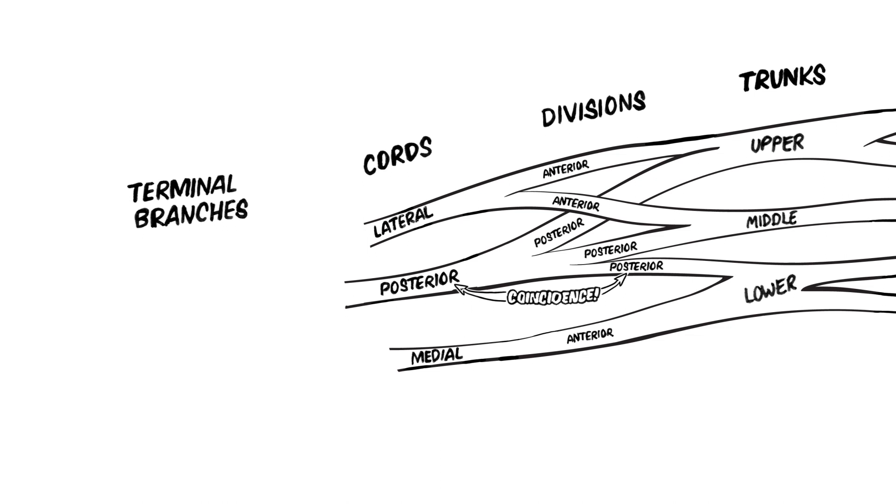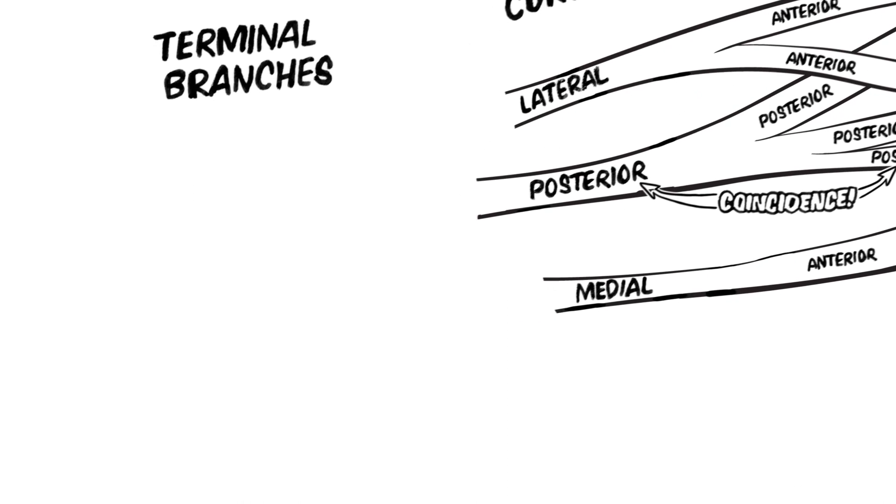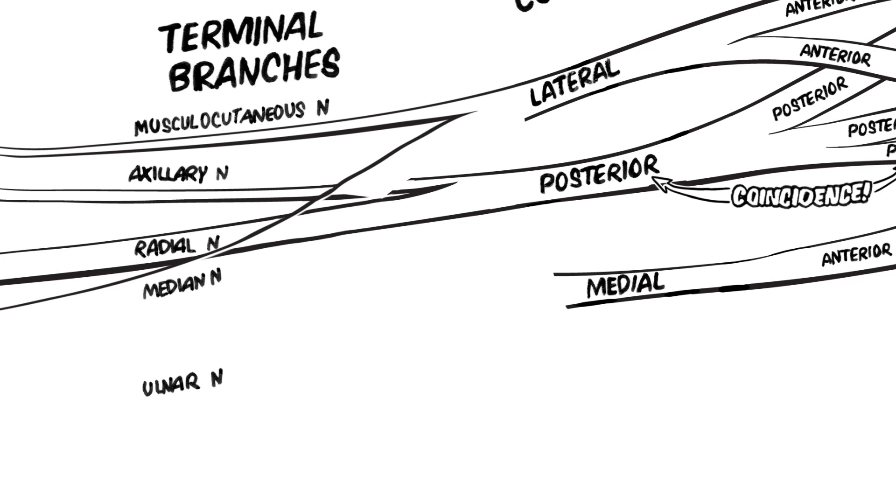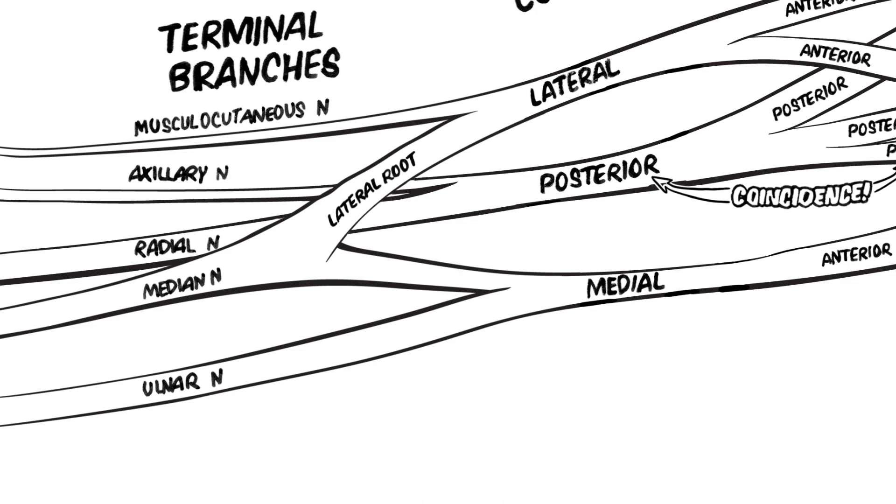Finally, the brachial plexus will form its five terminal branches. These are the axillary nerve, radial nerve, musculocutaneous nerve, ulnar nerve, and median nerve. The posterior cord divides into two terminal branches, the axillary nerve and the radial nerve. The lateral cord divides into the musculocutaneous nerve and contributes to the median nerve by giving off the lateral root of the median nerve. The medial cord divides into the ulnar nerve and also contributes to the median nerve by giving the medial root of the median nerve, which joins with the lateral root of the median nerve to form the median nerve proper.